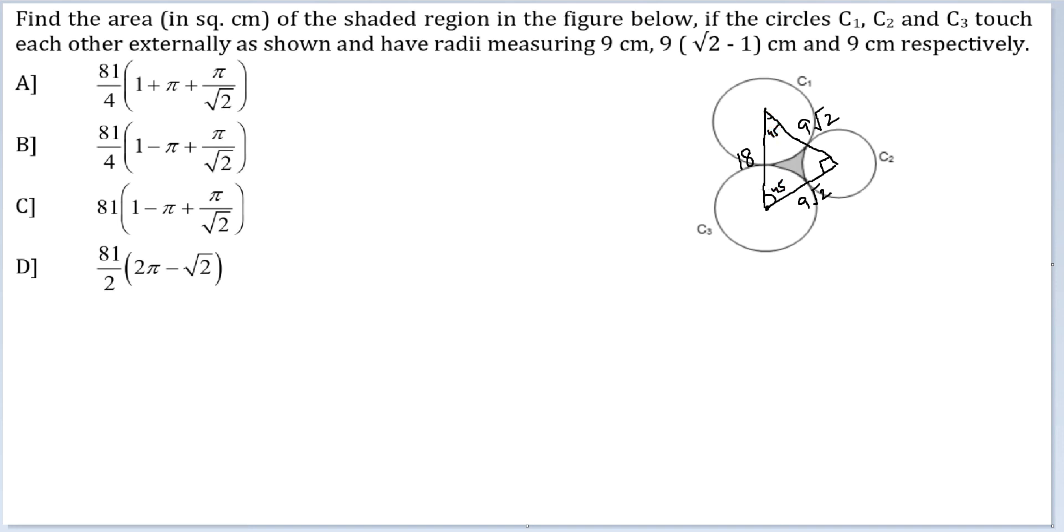So essentially, the area of this triangle would be half into 9 root 2 into 9 root 2 which is equal to 81.